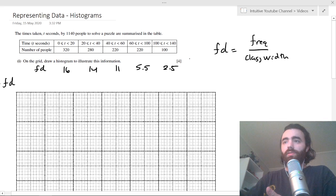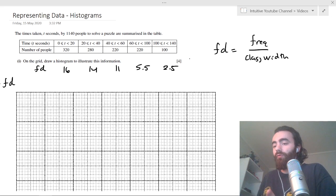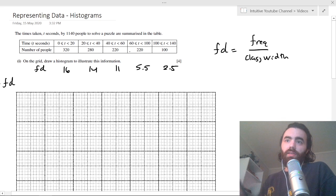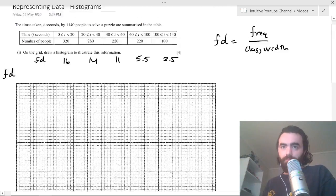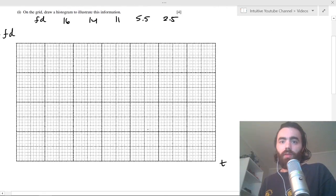And the reason that we use frequency density is because the measure of density in general for making comparisons between things, for example, if you were to make comparisons between different histograms, the frequency density is a really good measure. It's a good comparative metric for you to do that, because these class widths here, they vary in size. So the frequency density is a good measure for things.